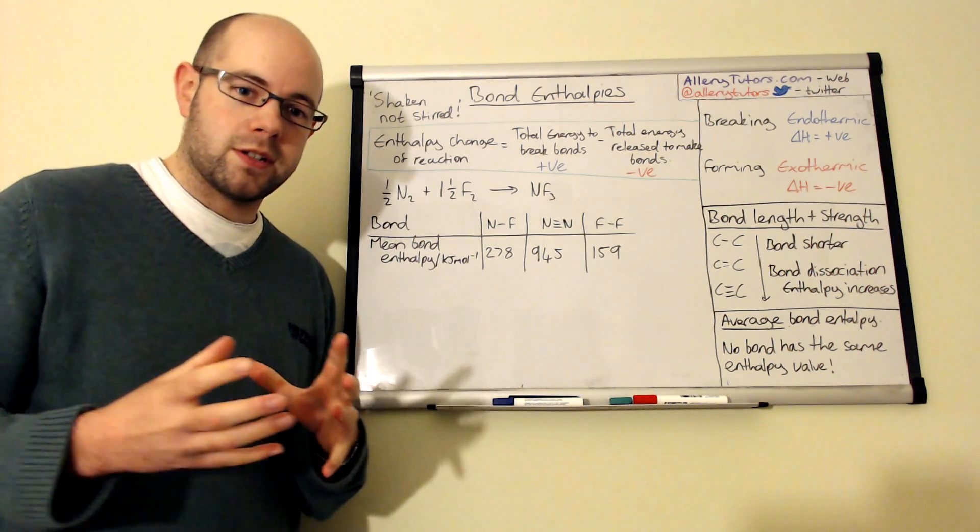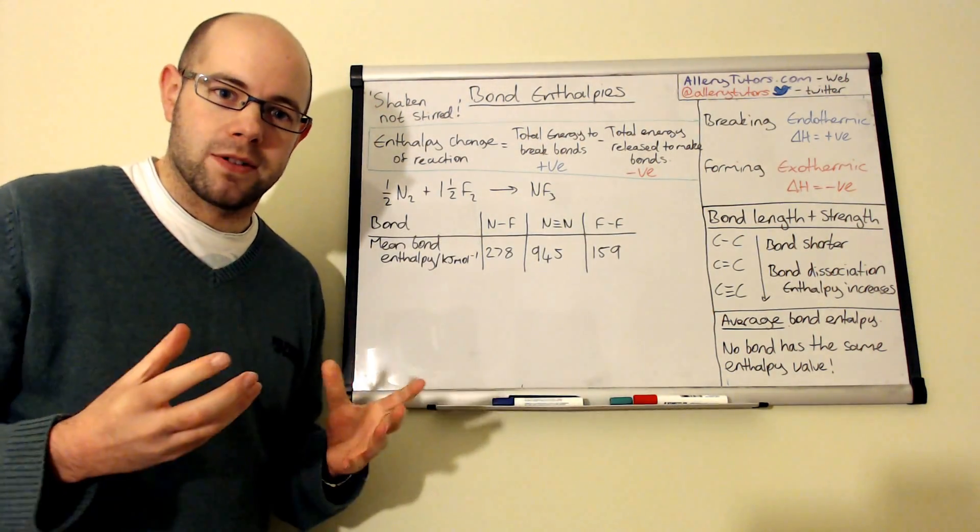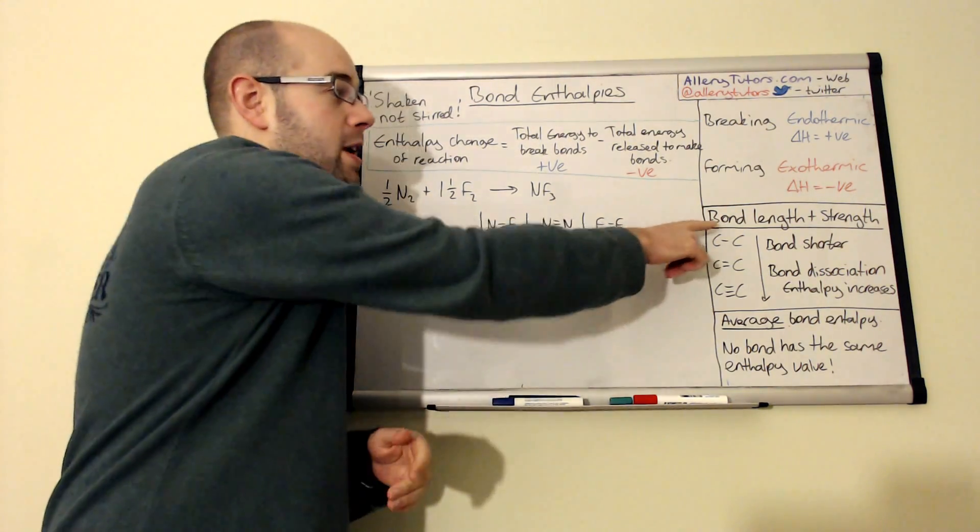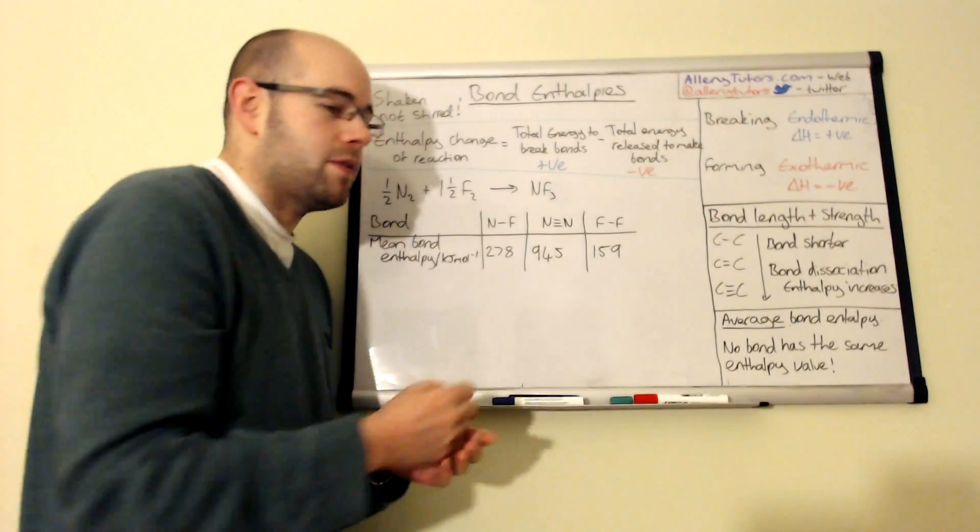When we form bonds in products, we call that exothermic and energy is actually given out. We'll come back to that in a minute when we look at the calculation. But I just want to look at this bit here which is the bond length and strength.